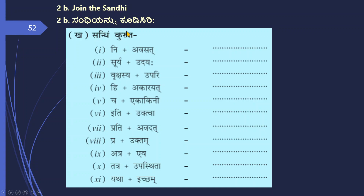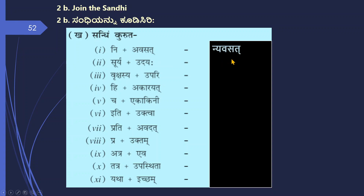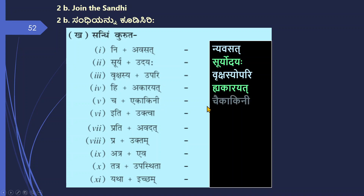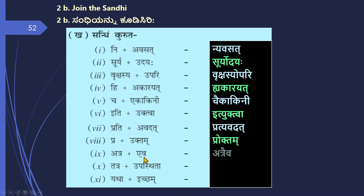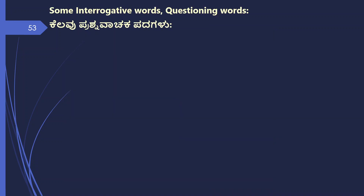Sandhim kurutha — join the Sandhi. Ni plus avasat is Niavasat. Suryaha plus udayaha is Suryodayaha. Vrikshasyaya plus upari is Vrikshasyopari. Hi plus akarayad is Hyakarayad. Cha plus ekakini is Chaikakini. Iti plus uktva is Ityuktva. Prati plus avadad is Pratyavadad. Pra plus uktam is Proktam. Atra plus eva is Atraiva. Tatra plus upasthita is Tatropasthita. Yatha plus iccham is Yatheccham. These are the Sandhis which are asked.